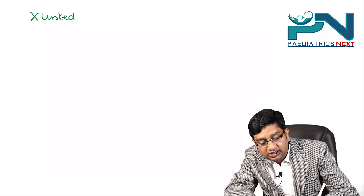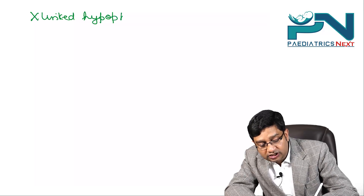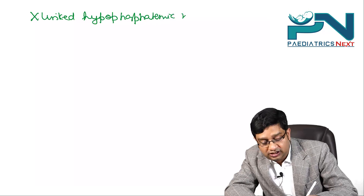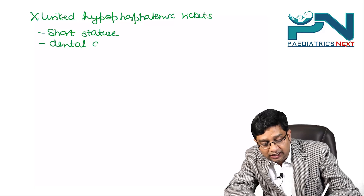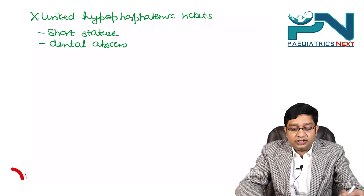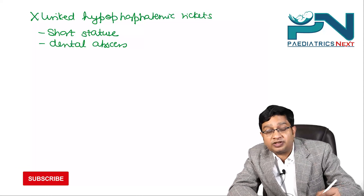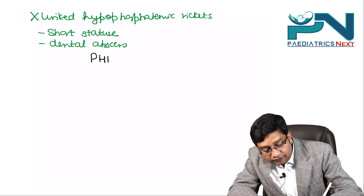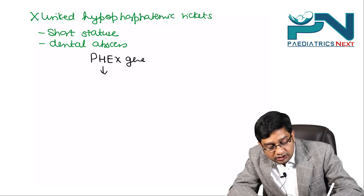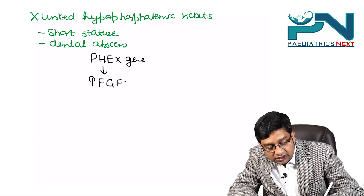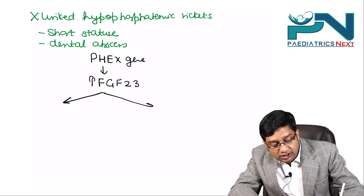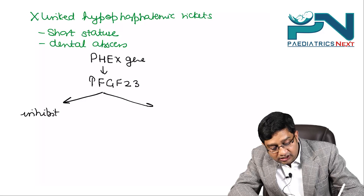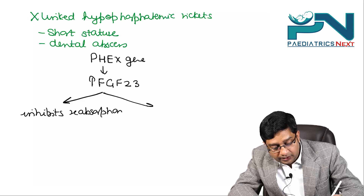The additional clues in the question are short stature and dental abscesses. In X-linked hypophosphatemic rickets, there is expression of the PHEX gene, which leads to increased fibroblast growth factor 23 (FGF23). FGF23 inhibits the reabsorption of phosphorus in the kidney.